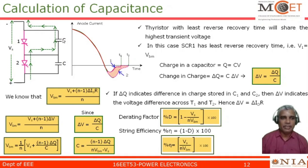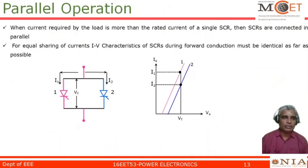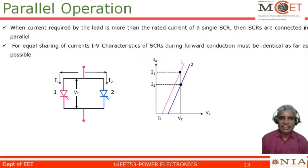Dynamic equalization can be solved by using a capacitance, whereas the static equalization method uses a resistance to solve the voltage imbalancing problem. Now let us go for parallel operation of SCRs. When the current required by the load is more than the rated current of a single SCR, then SCRs will be connected in parallel. But when connecting in parallel, it is expected that the IV characteristics of all the SCRs connected in parallel should be identical in nature, though practically that is not possible.